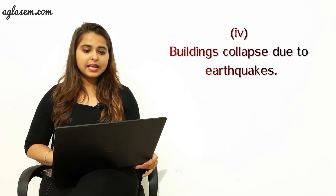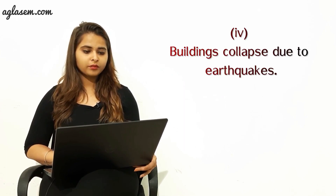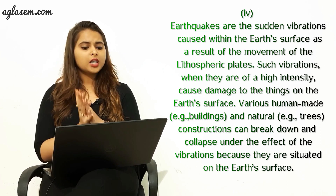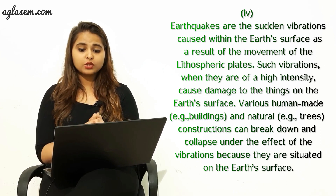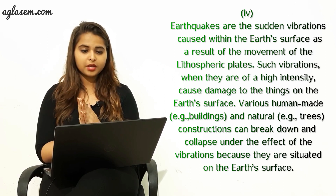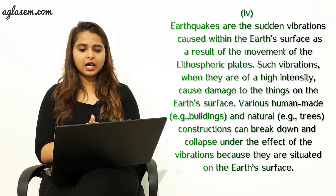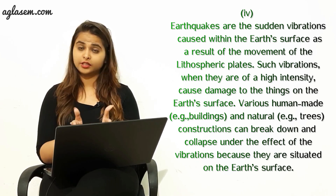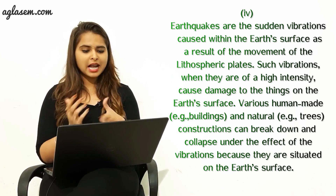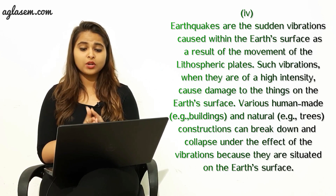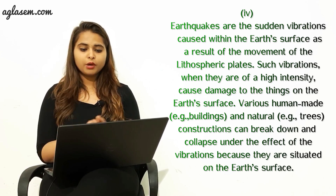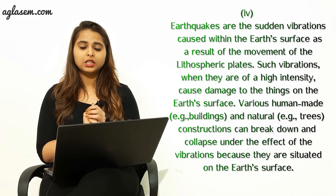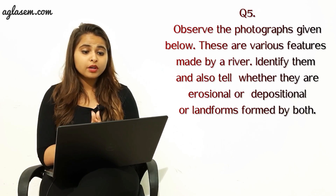Part D — buildings collapse due to earthquakes. The answer is: earthquakes are the sudden vibrations caused within the earth's surface as a result of the movement of the lithospheric plates. Such vibrations, when they are of high intensity, cause damage to things on the earth's surface. Various human-made and natural constructions can break down and collapse under the effect of these vibrations because they are situated on the earth's surface.